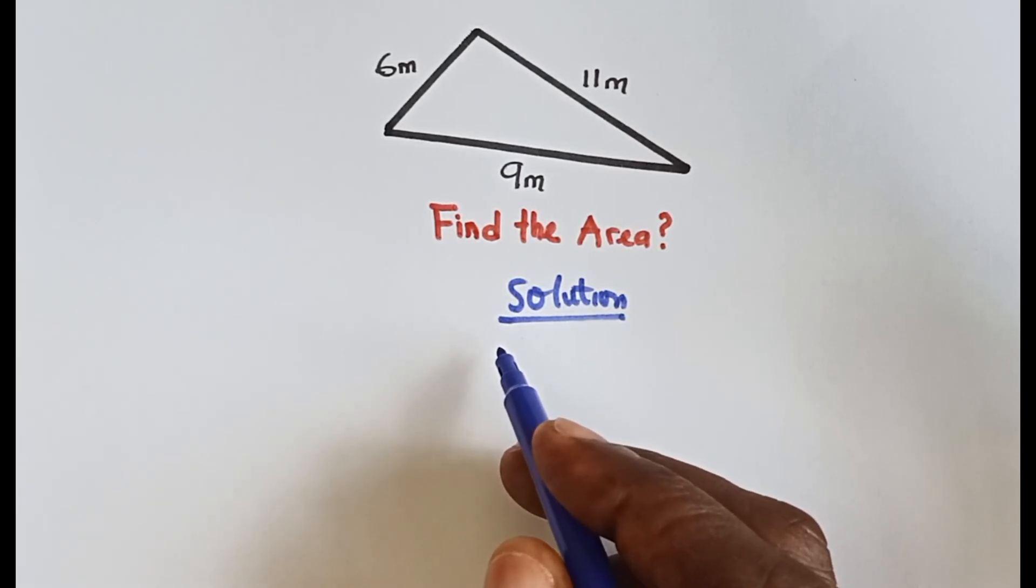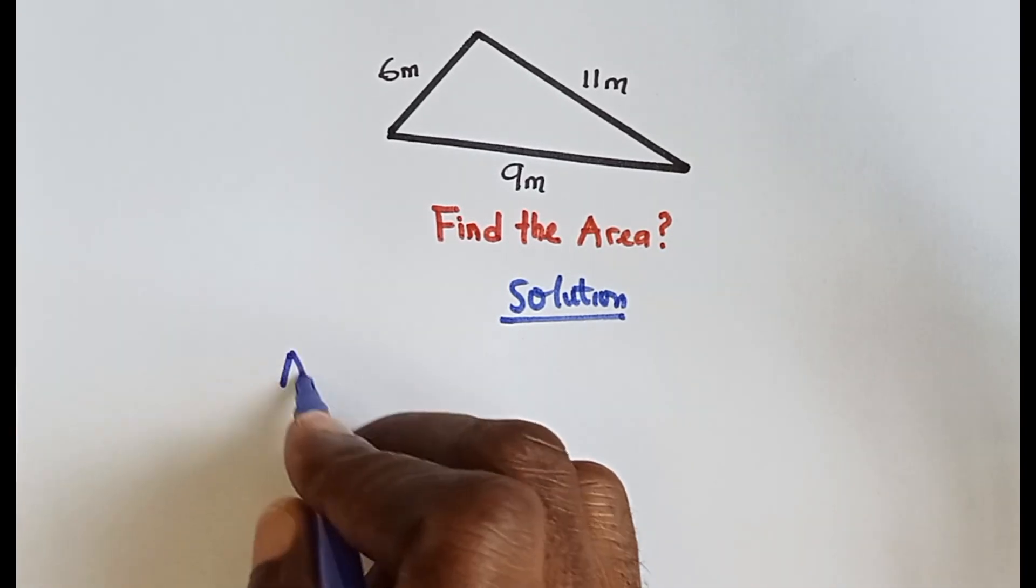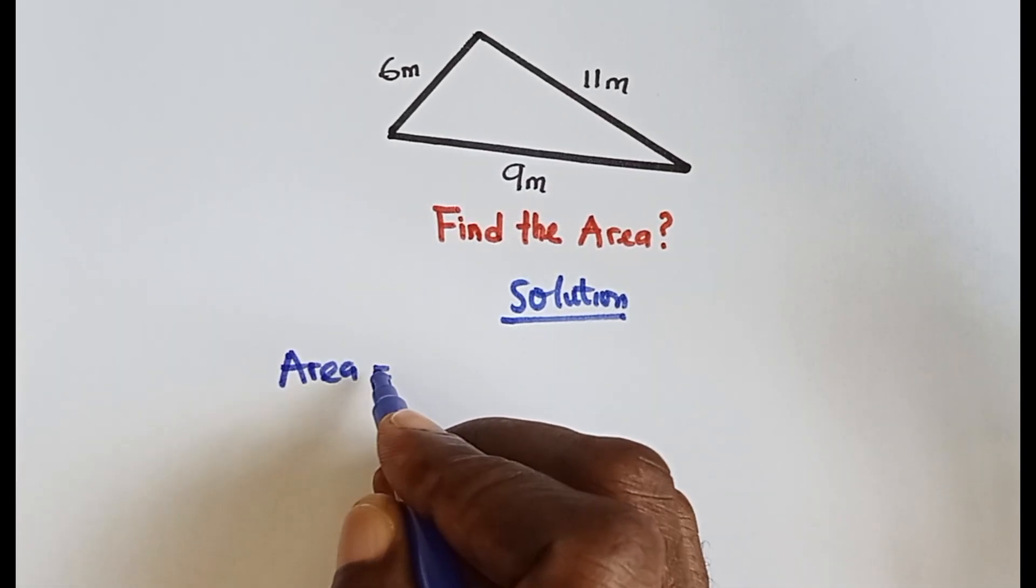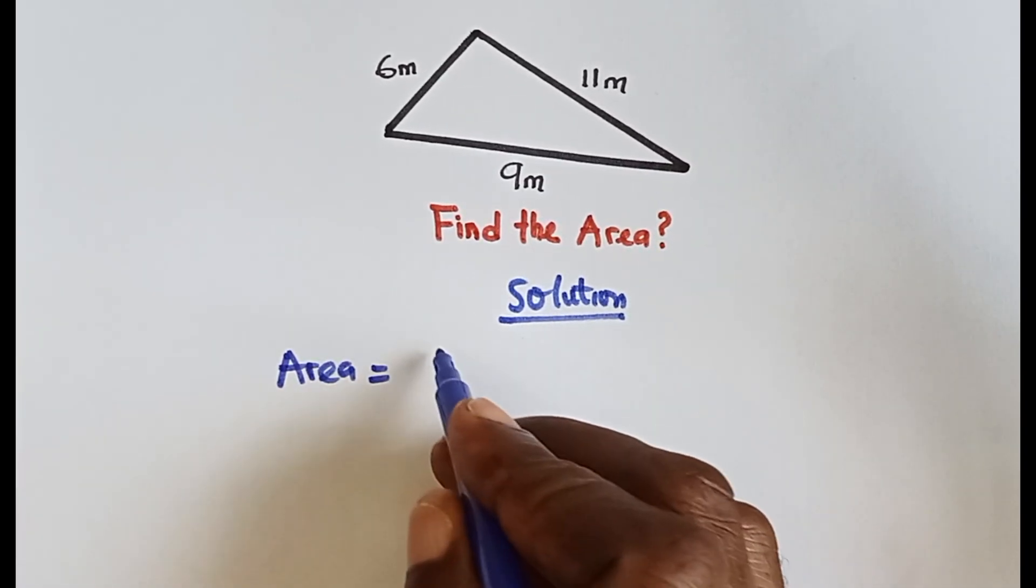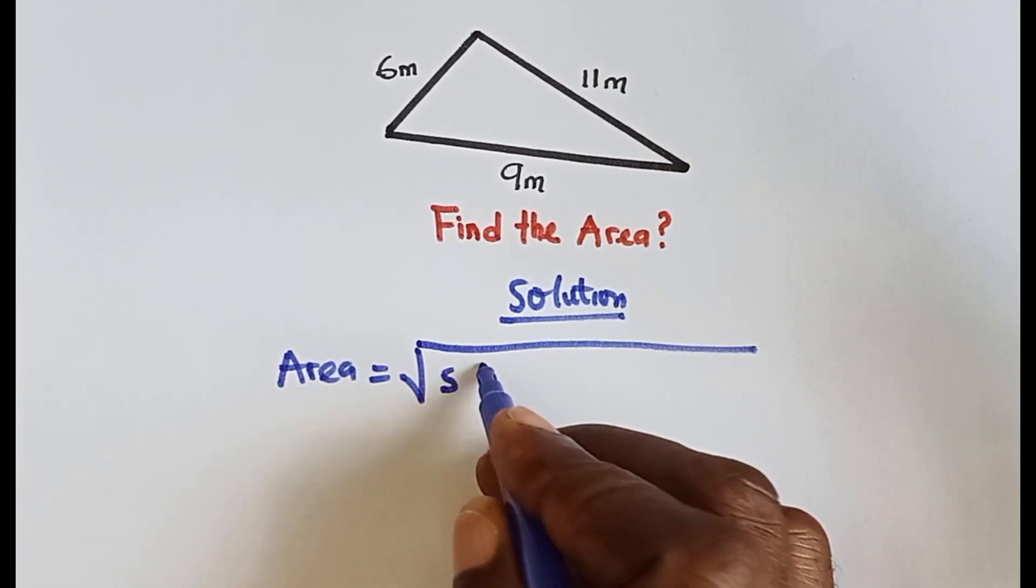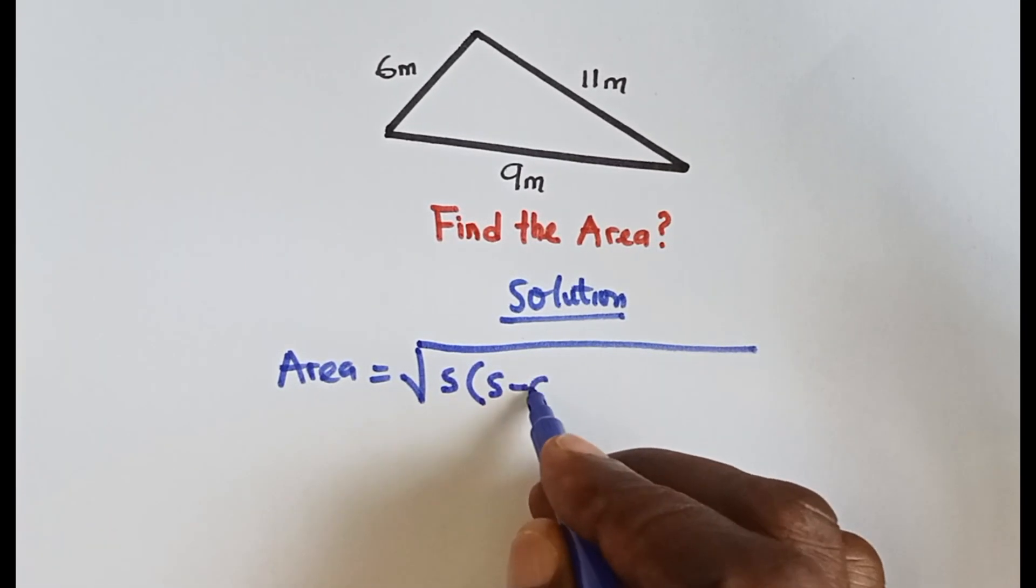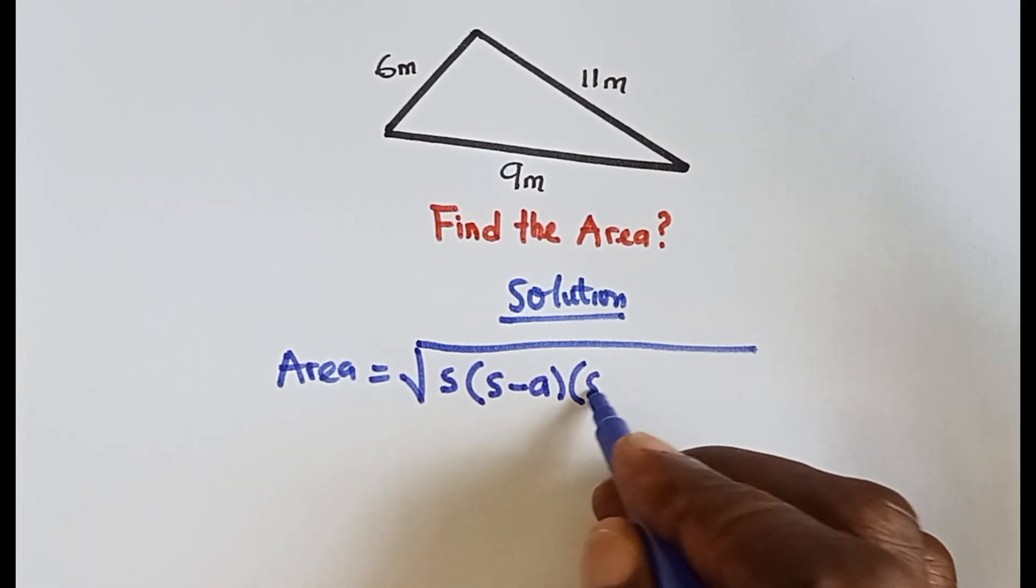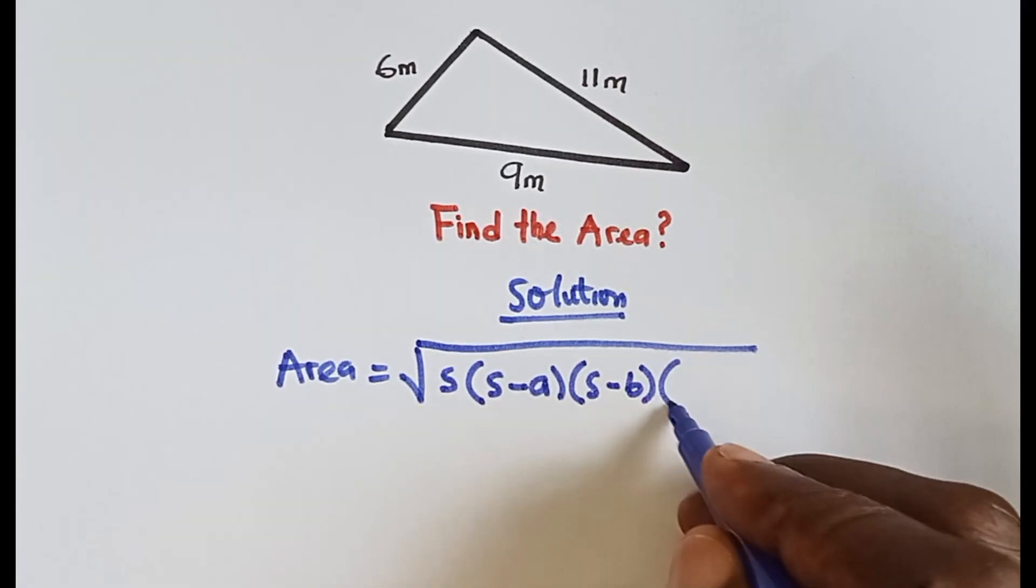Now we are going to use this formula to find the area. The area of this triangle is given to be square root of s times (s minus a) times (s minus b) times (s minus c). So what is s, what is a, what is b, and what is c?